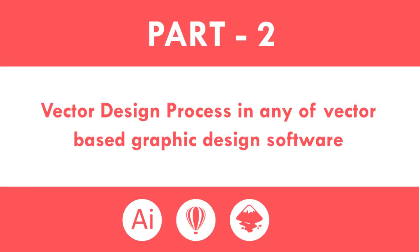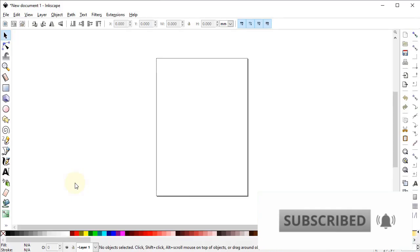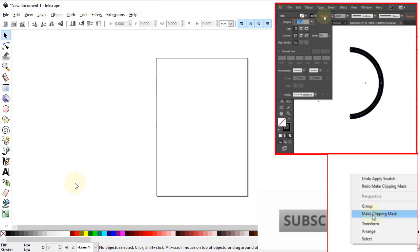Let's continue with Part Two: the vector design process. In any vector-based graphic design software you can follow this tutorial — whether you are using Adobe Illustrator, CorelDRAW, or Inkscape — because I will use simple tools like the pen tool, circle tool, and rectangle tool, which are available in each and every software. I will also elaborate each dimension I use so that you can easily follow along in any software.